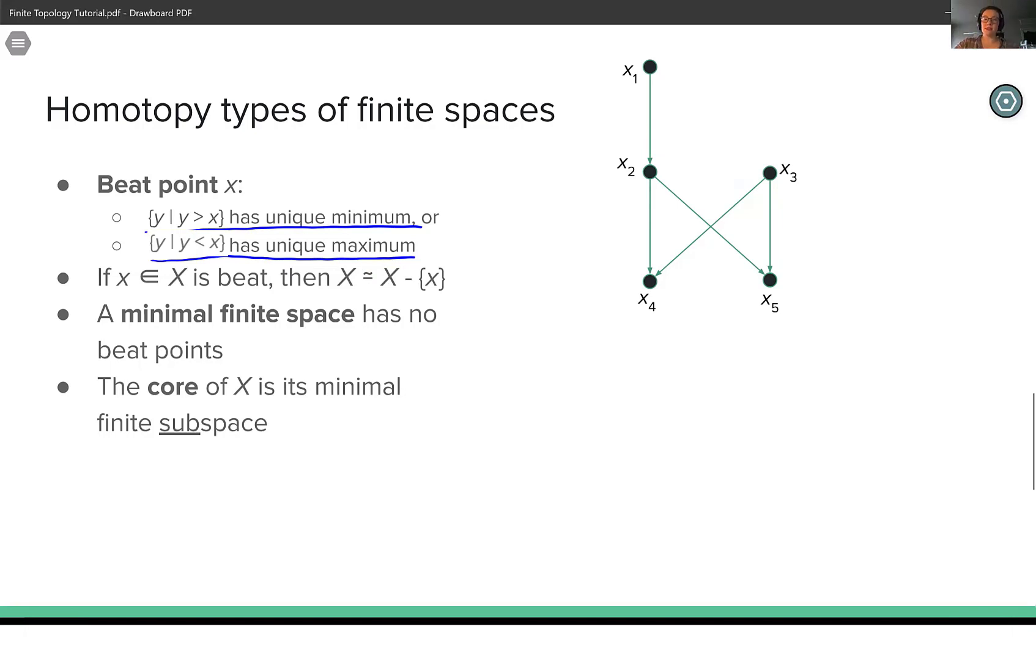So in this example here, so this is the Hasse diagram that I drew a few slides ago. The point x1 is beat because if we look at its punctured down set, it has a unique maximal element x2. So we can remove the point x1 and get a homotopy equivalence onto this space right here, with these edges drawn in.